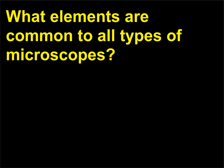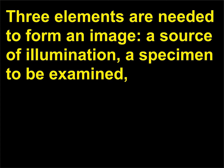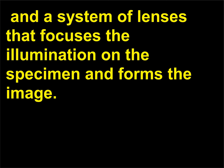What elements are common to all types of microscopes? Three elements are needed to form an image: a source of illumination, a specimen to be examined, and a system of lenses that focuses the illumination on the specimen and forms the image.